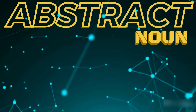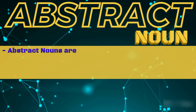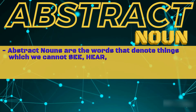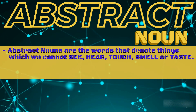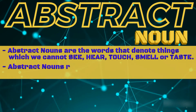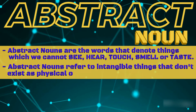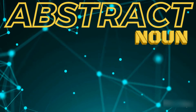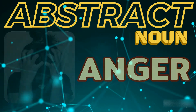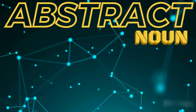What is an abstract noun? Abstract nouns are the words that denote things which we cannot see, hear, touch, smell or taste. Abstract nouns refer to intangible things that don't exist as physical objects. Love, joy, truth, anger, fear are examples of abstract nouns.